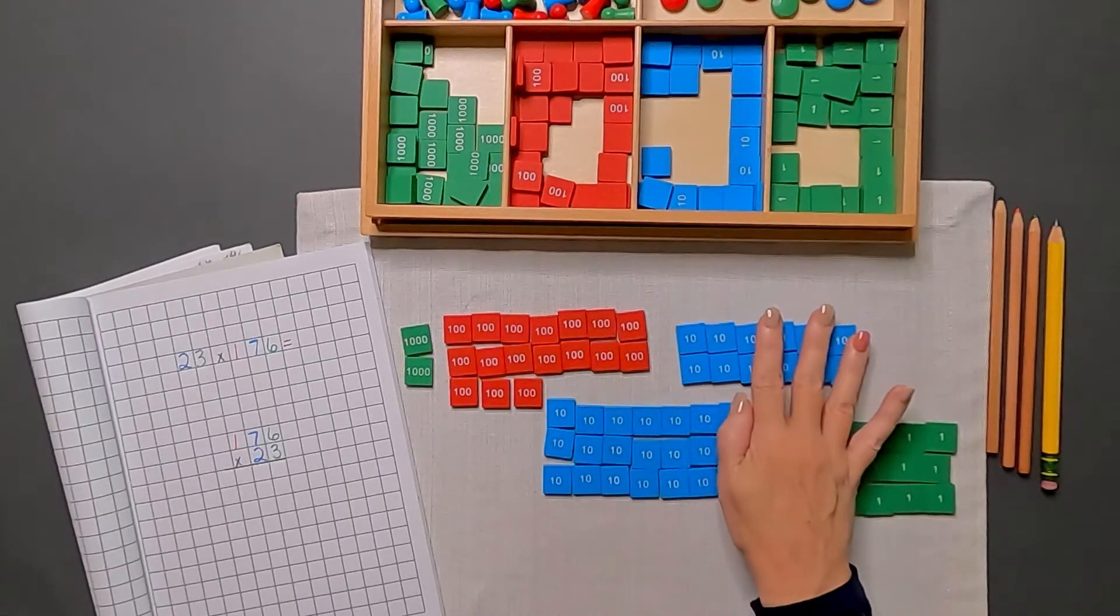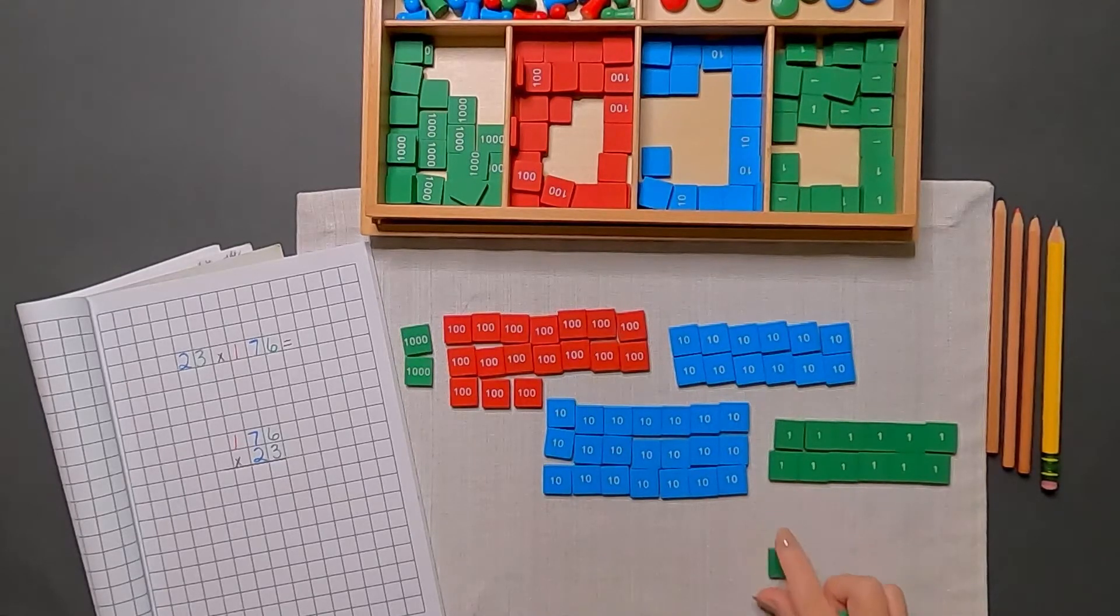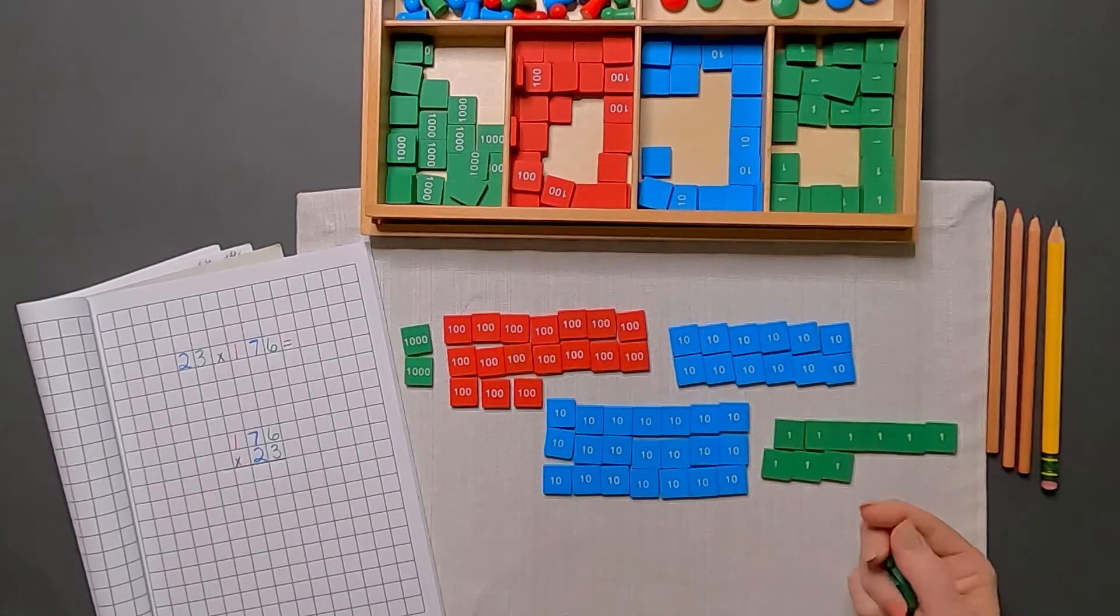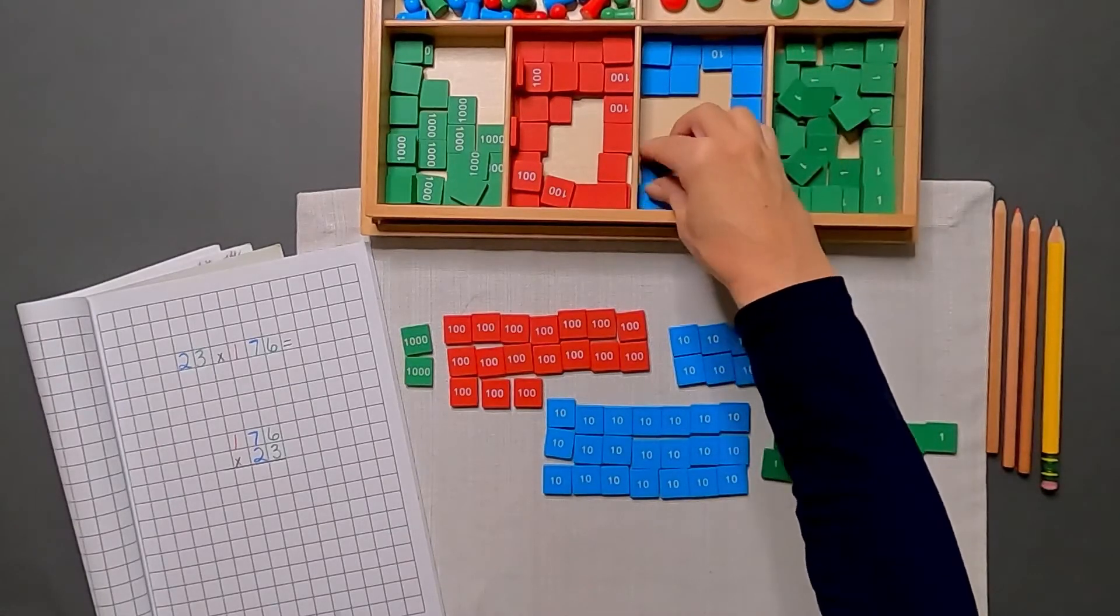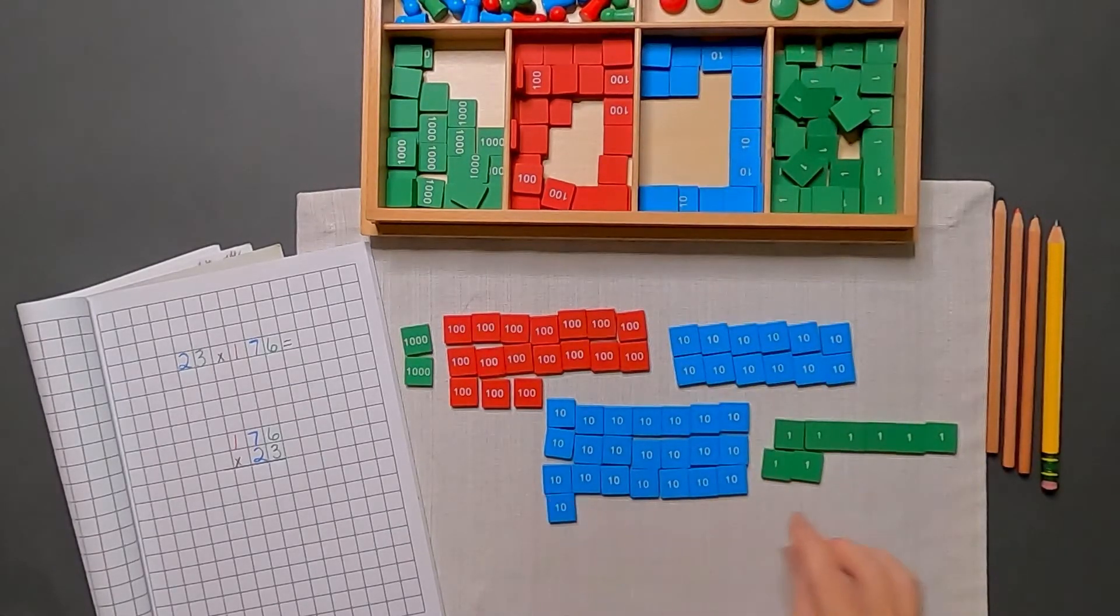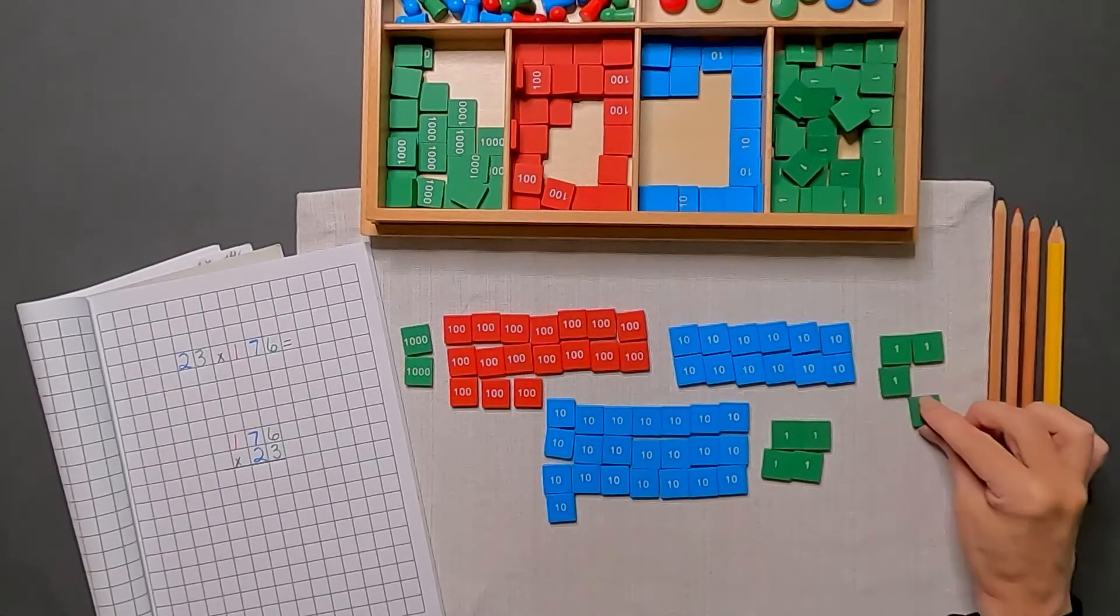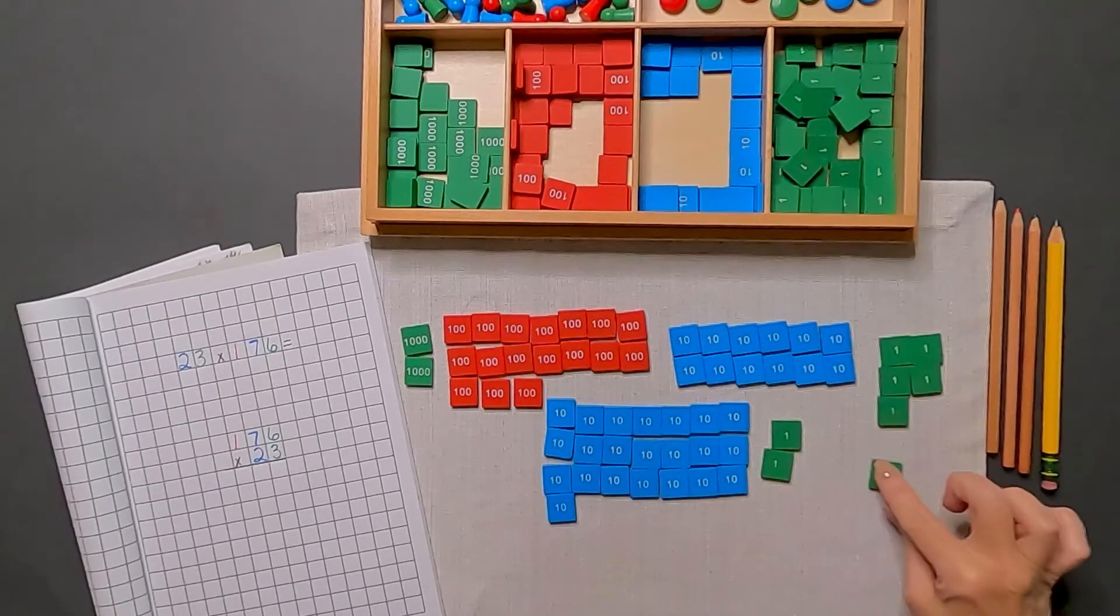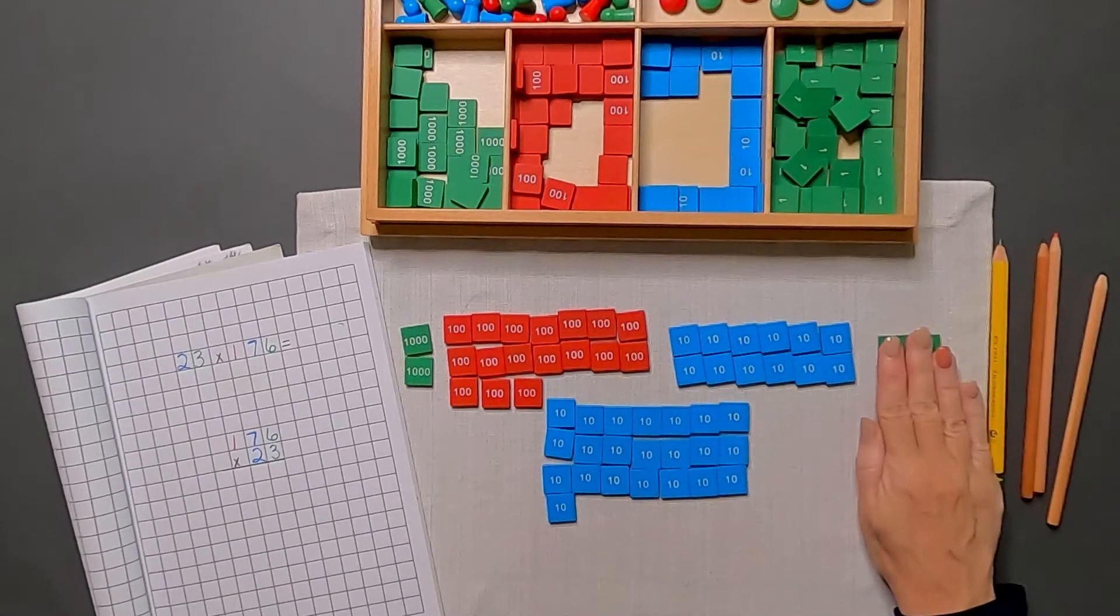Okay, so we can start counting. 1, 2, 3, 4, 5, 6, 7, 8, 9, 10. Exchange. 1, 2, 3, 4, 5, 6, 7, 8. I have 8 units.